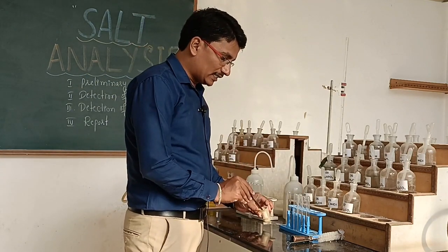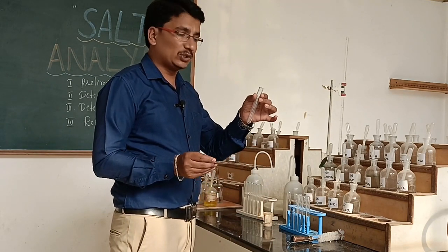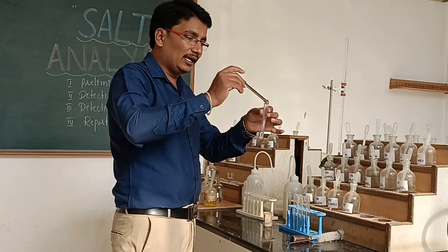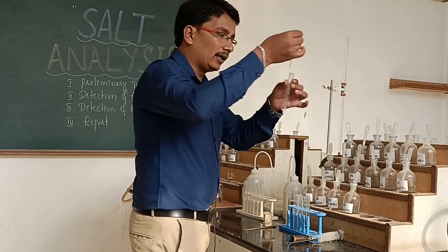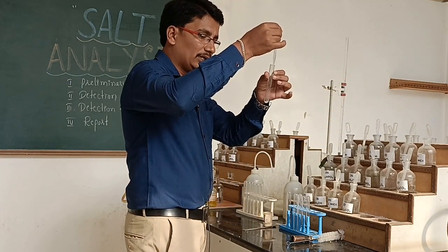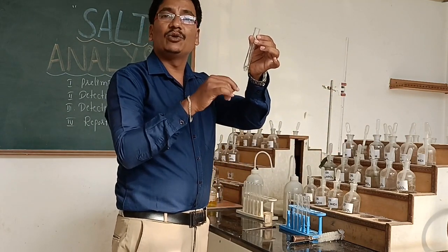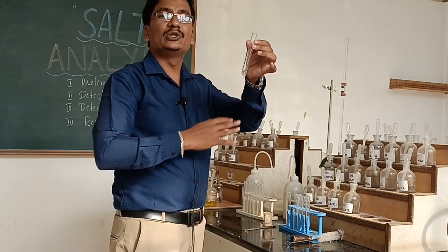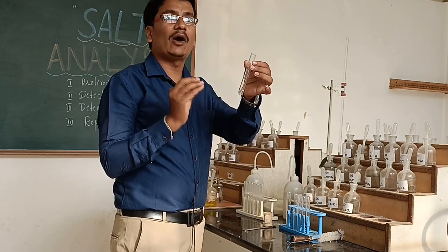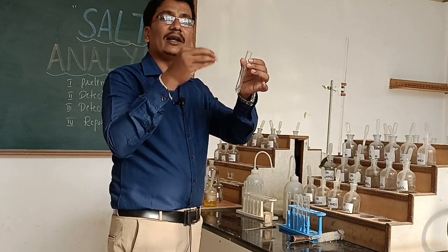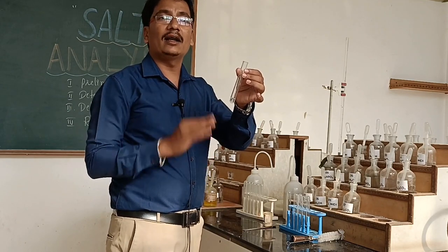We begin with the detection of first group acid radicals. The test is: salt plus dilute HCl or H2SO4. I will add dilute HCl to the test tube. There is no effervescence and no fumes evolved. If there is no brisk effervescence, then the first group acid radicals are absent — that is, carbonate is absent.